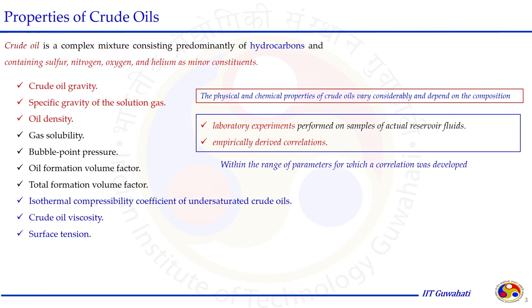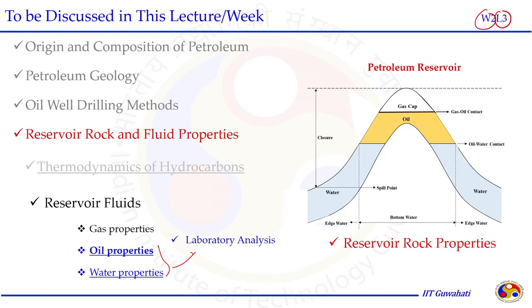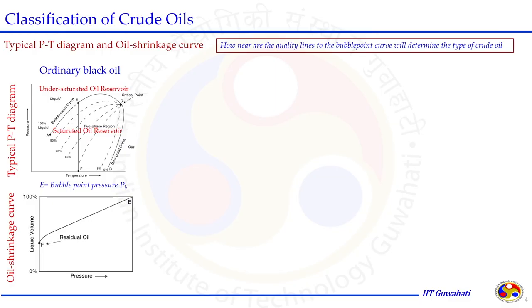In the reservoir, crude oil is in contact with gas on the top and water at the bottom due to density differences. Natural gas has good solubility in crude oil at reservoir temperature and pressure conditions. When reservoir temperature and pressure vary, even with the same compositions, the solubility changes. We need to understand how much gas is soluble at particular conditions in the oil, as the properties will change accordingly.